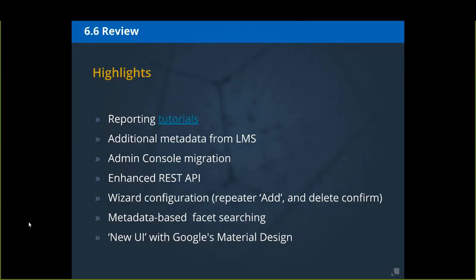Metadata-based facet searching has been added — this has been a pain point in 6.5 and below, where the only facet-based filtering available has really been MIME types. In the new UI, you can pick an arbitrary metadata path and it will fill in the options based on the values already in the repository items, giving you counts similar to the browse topics.